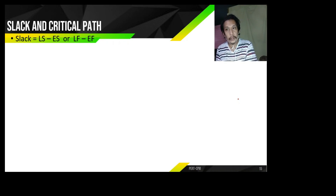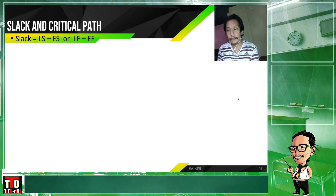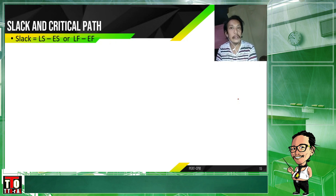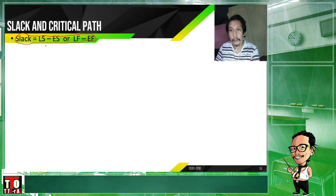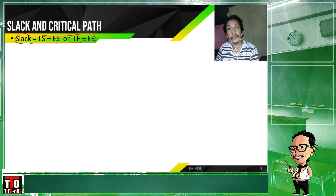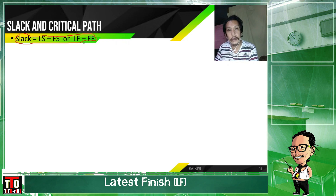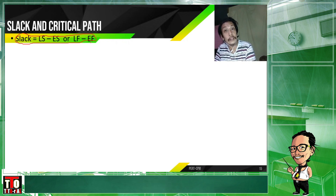So, after the forward and backward pass, the next thing that we are going to do — the next step — is to determine the slack values and the critical path. The formula for our slack is: LS (latest start) minus ES (earliest start), or LF (latest finish) minus EF (earliest finish).